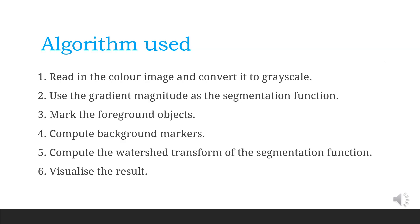The algorithm used is as follows: read in the color image and convert it to grayscale; use the gradient magnitude as a segmentation function; mark the foreground objects; compute background markers; compute the watershed transform of the segmentation function; visualize the result.